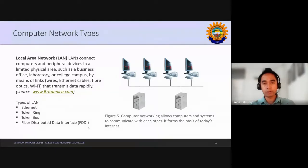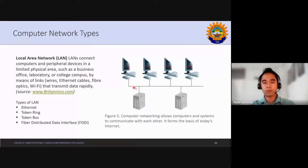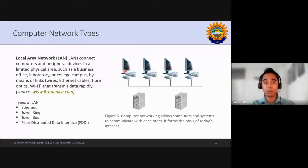Local area networks communicate with the server. For example, we have four computers — each computer connects to the server, and the server feeds information back. At the same time, when a computer would like to connect to another PC or computer, it would be controlled by the server. If the server allows the connection to another computer or remote access, it would be easy for both to connect.